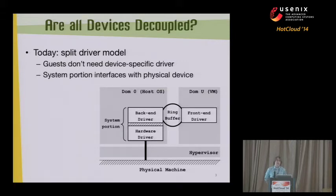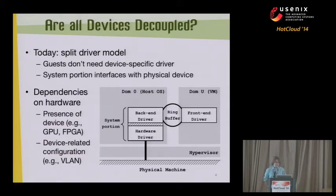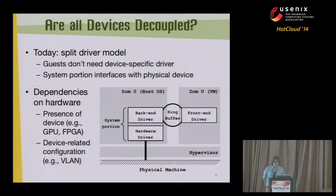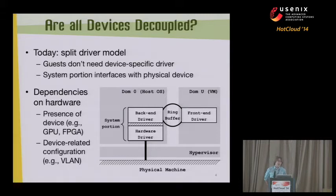This looks very decoupled - you can take the guest, start it on another machine, and as long as you have a back-end driver, the hardware doesn't even have to match. But the problem is there are dependencies on hardware. The device just isn't there in a new location. If you move the guest to another machine, you may not have a GPU or an FPGA that you had before. Also, there are device-related configuration issues like network configuration - for example, a VLAN tag that is set for some particular port.